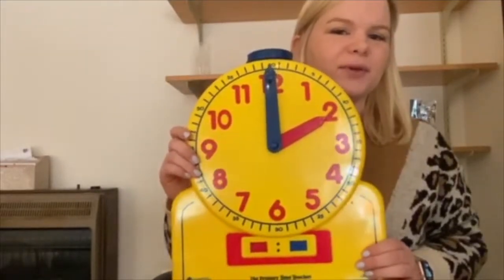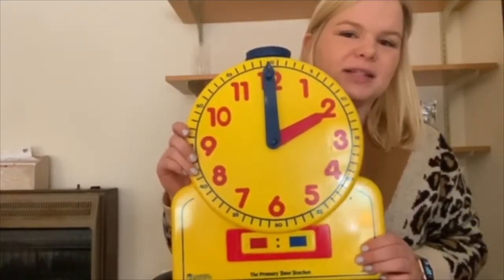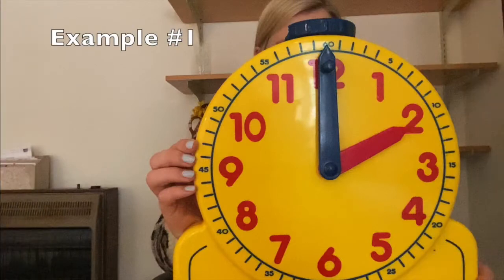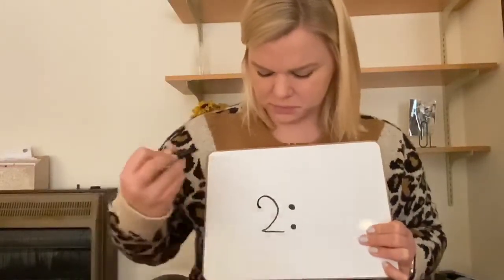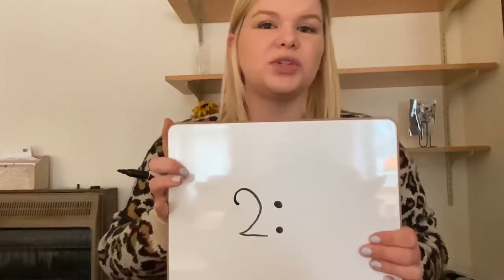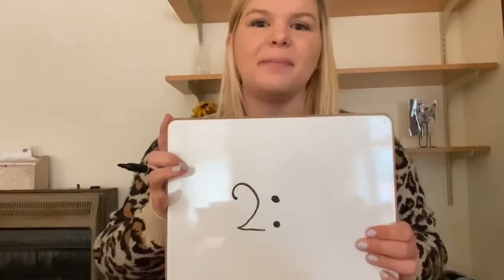Now let's try a few examples. If you would like to do it along with me, grab a paper and a pencil or a whiteboard and eraser if you have one. I am going to show you the analog clock for a few seconds and we are going to write the digital time. I'm going to start by writing my colon so that I know to separate the two numbers. The hour hand on that clock was pointing to the two, so I know that we are in the two o'clock hour. The minute hand was pointing straight up or to the 12, which means it is exactly two o'clock.